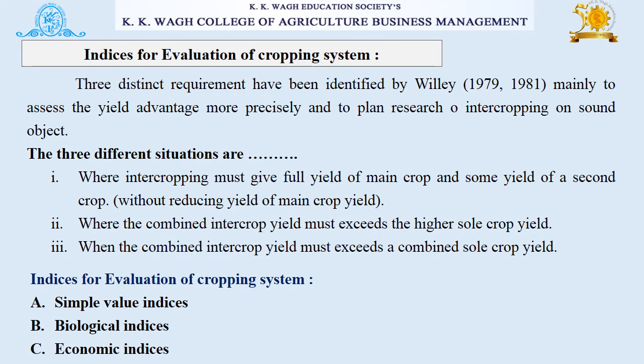Three distinct requirements have been identified by VILA in 1979-1981, mainly to assess the yield advantage more precisely and to conduct research on intercropping on a sound basis. Three different situations are: where intercropping must give full yield of the main crop and yield of a second crop; where the combined intercrop yield must exceed the higher sole crop yield; and where the combined intercrop yield must exceed the combined sole crop yield. Indices for evaluation include simple value indices, biological indices, and economic indices.